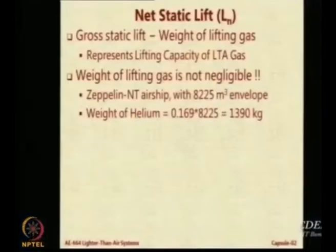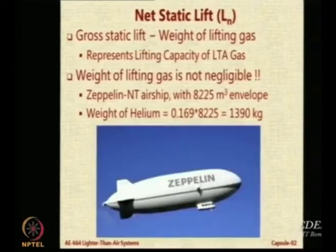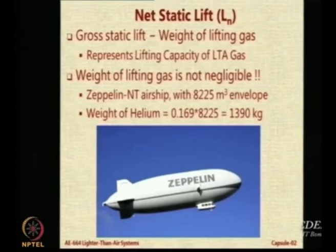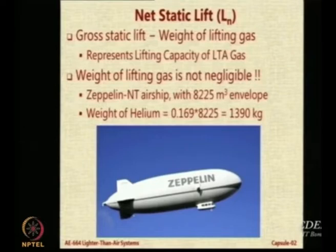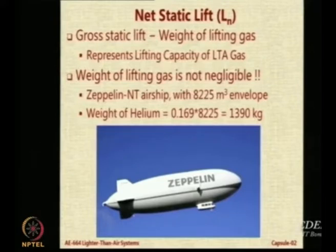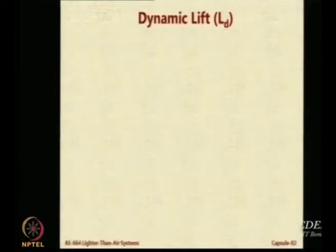The weight of the lifting gas is not a small thing. For example, looking at the Zeppelin NT, which has around 8,000 cubic meters of envelope, the weight of the lifting gas is more than a ton — 1,390 kg. So it is not a negligible number. In calculations, if you say let us ignore the weight of the gas because it is an LTA gas, you will end up with a huge error. Also, do not do double accounting for the gas. Some people subtract the self weight and then also subtract the gas weight — that is a very common mistake. The gas weight is already accounted for in the net lifting capacity, so do not do a double reduction.